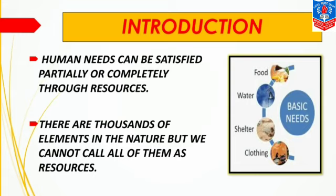The second point is there are thousands of elements in nature, but we cannot call all of them resources. There are many elements in nature that we don't use — everything available in nature is not useful. Only some things which are useful can be called resources, which man can use.